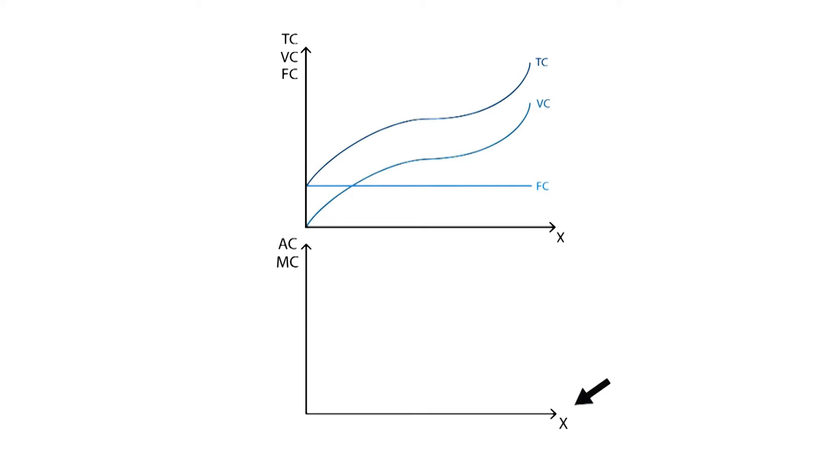The lower graph still measures output produced in the horizontal axis, and average and marginal cost is measured in the vertical axis. When output increases, the average fixed cost will decrease, since dividing a fixed cost into a greater number of output units makes it smaller.